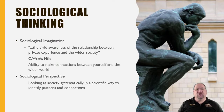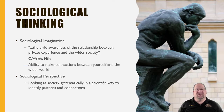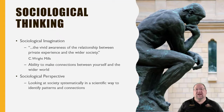To understand the sociological imagination, we look at perspectives and try to view society from a particular lens — not our own personal lens with our own biases, but from a scientific perspective. Looking at society systematically in a scientific way to identify patterns and their connections. That is the best summary of the sociological perspective, and we use three different ways of doing that.